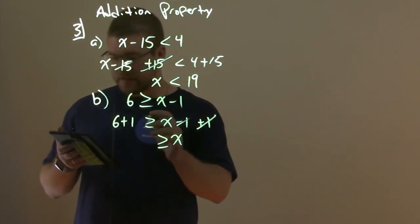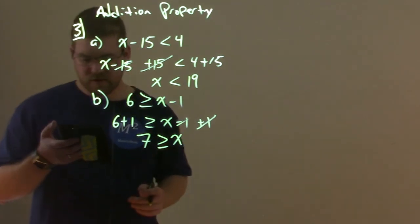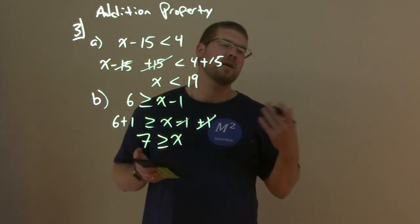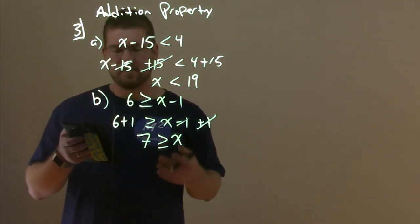X is by itself. The 1's cancel. And 6 plus 1 is 7. And so 7 is greater than or equal to X, or you can rewrite it if you want: X is less than or equal to 7.